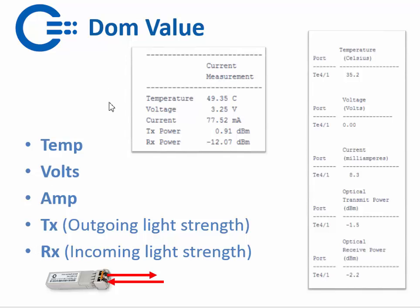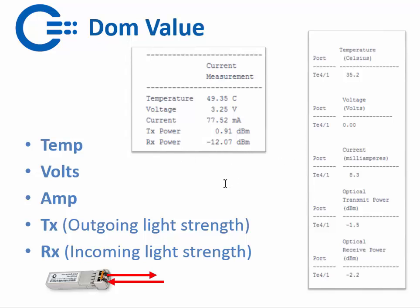Typically it looks like this. For example, if you have a Cisco and you do a 'show interface transceiver,' you will see values for temperature, voltage, current, and TX power. You can see how many dBm is outgoing, and for RX — from the other side — minus 12 dBm is coming in.